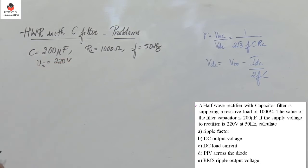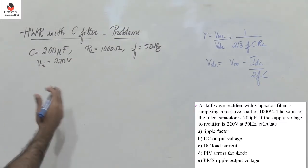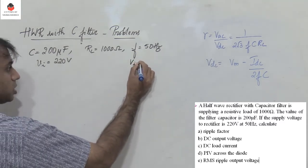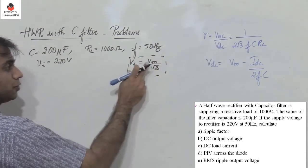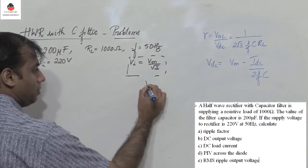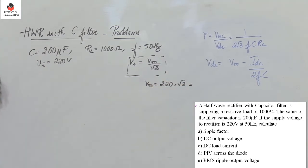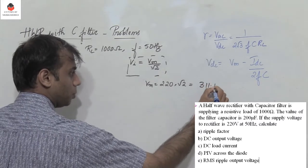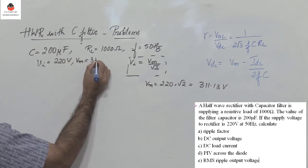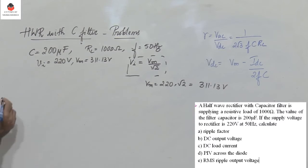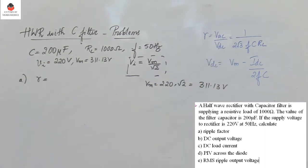The input voltage VI is 220 volts, which is the RMS value of the sine wave at the transformer primary. To find Vm, we use the expression VI equals Vm by root 2, so Vm equals 220 multiplied by root 2, which gives Vm equals 311.13 volts. Now we need to find the ripple factor gamma, given by the expression 1 by 2 root 3 FC·RL.